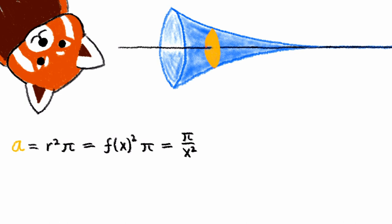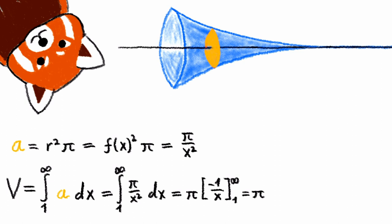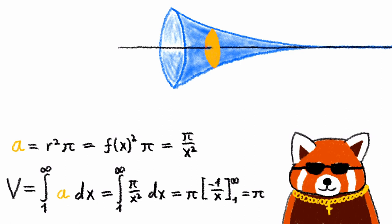By the same argument as before, the overall volume v can be obtained by integrating these circle areas over the domain of our shape. Using polynomial integration rules, we arrive at the solution v equals pi. Therefore, this integral does converge and gives us a finite solution for the volume. We have found a shape with finite volume and infinite surface area, just as Rex suggested.